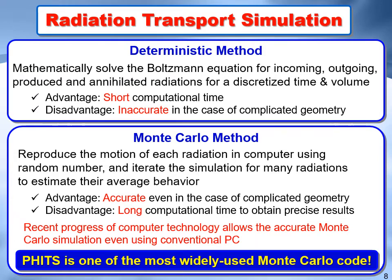Lastly, we would like to explain the basics of radiation transport simulation. There are two types of simulation methods: the deterministic method and the Monte Carlo method. In the deterministic method, radiations are transported by mathematically solving the Boltzmann equation for incoming, outgoing, produced, and annihilated radiations for a discretized time and volume. Therefore, it has short computational time, but is inaccurate in the case of complicated geometry because many assumptions must be introduced to mathematically solve the equation.